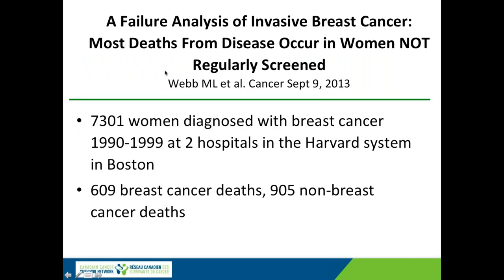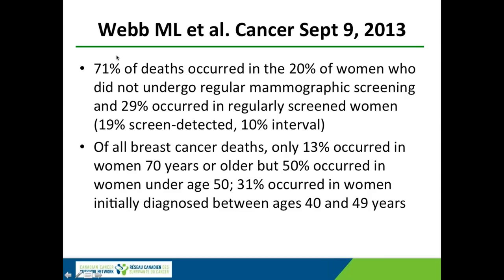Here's another study using different methodology. They looked at over 7,000 women diagnosed with breast cancer over a 10-year period at two hospitals in the Harvard system in Boston. 609 of them died of breast cancer and 905 died of other causes. Most of the deaths — 71% — occurred in the 20% of women who did not have regular mammograms. Of all the breast cancer deaths, only 13% occurred in women older than 70, but 50% occurred in women under the age of 50, and 31% in women initially diagnosed between 40 and 49. This drives home that women should start screening at age 40.